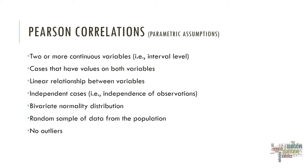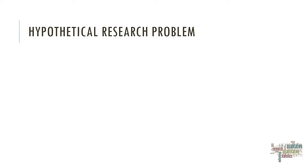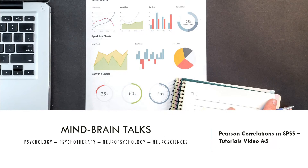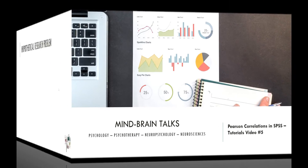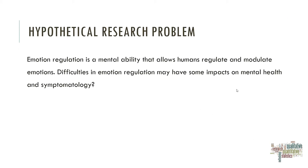Now I'll show you how to apply this knowledge to a hypothetical research problem. Please look at this as a hypothetical problem — this is not true data. I made this up just to give you an illustration about how to perform correlational analysis on some random data. Emotion regulation is a mental ability that allows humans to regulate and modulate emotions. Difficulties in emotional regulation may have some impacts on mental health and symptomatology. Emotion difficulties are positively correlated with symptomatology.